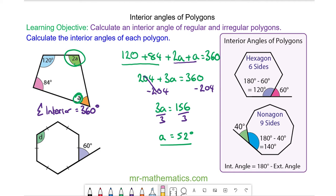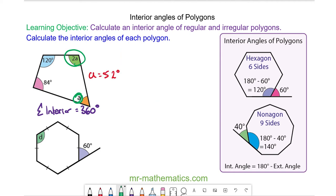Okay let's try the hexagon. Within our hexagon we have 1, 2, 3, 4 triangles which is 4 lots of 180.